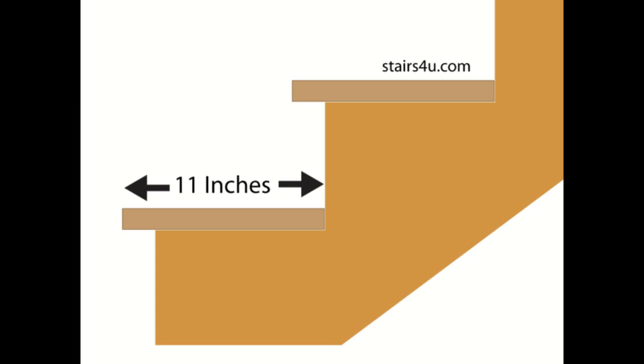So to sum everything up, your average stair tread measurement for a private individual residential dwelling house or building is going to be 11 inches with a 10 inch run.